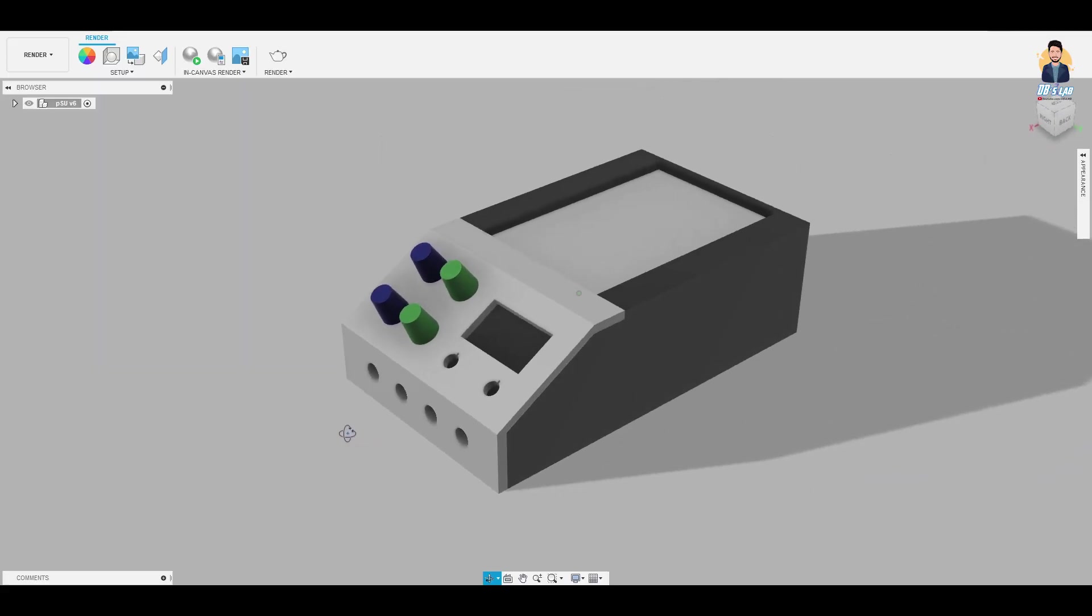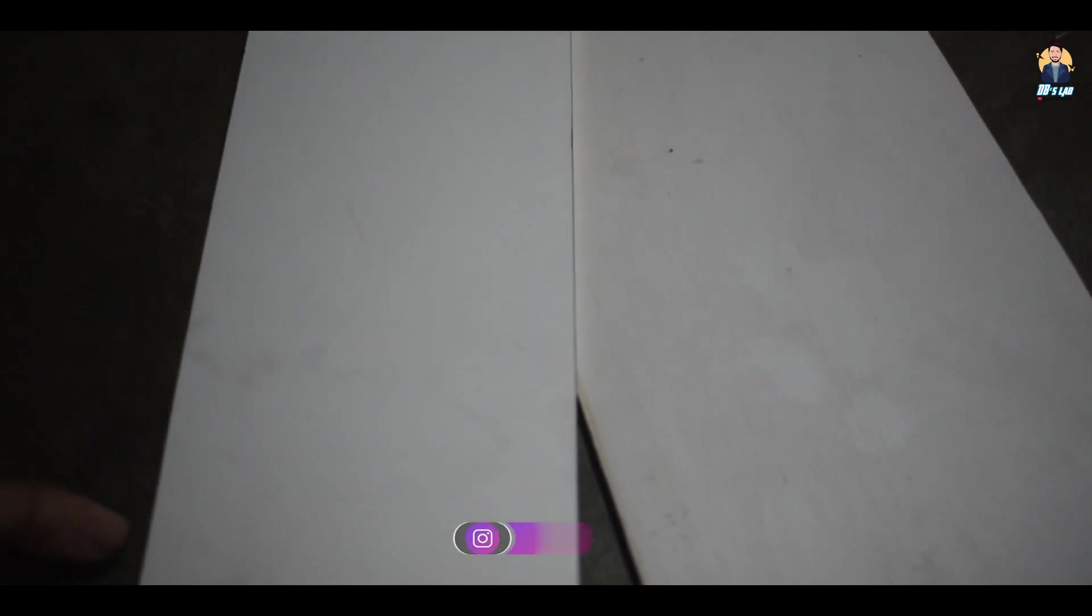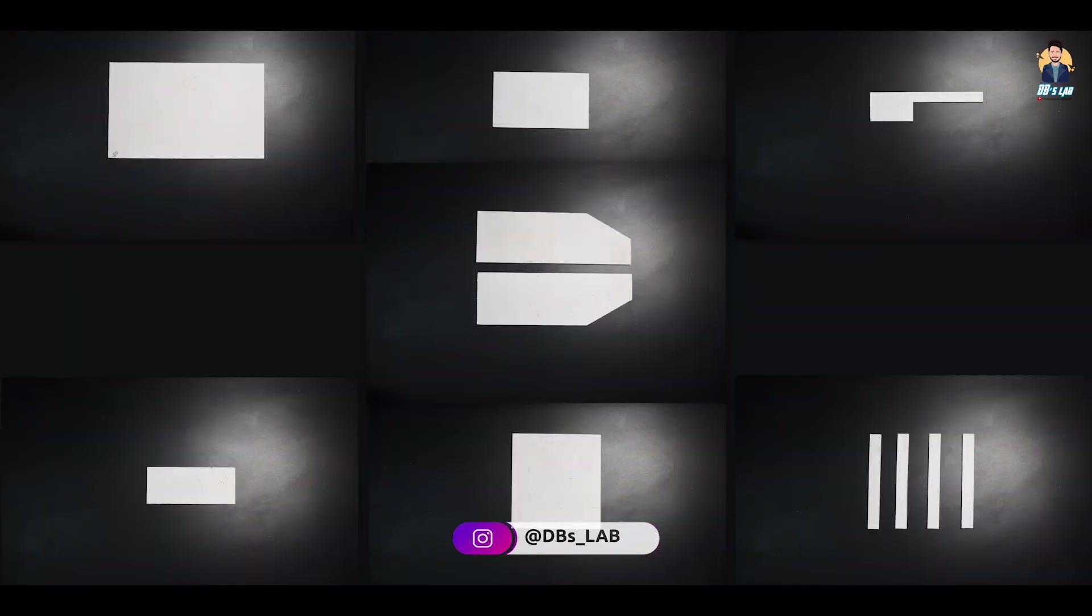Step 2: Making the enclosure. So for the enclosure, I have used sunboard or foam sheet. You will need all these pieces.